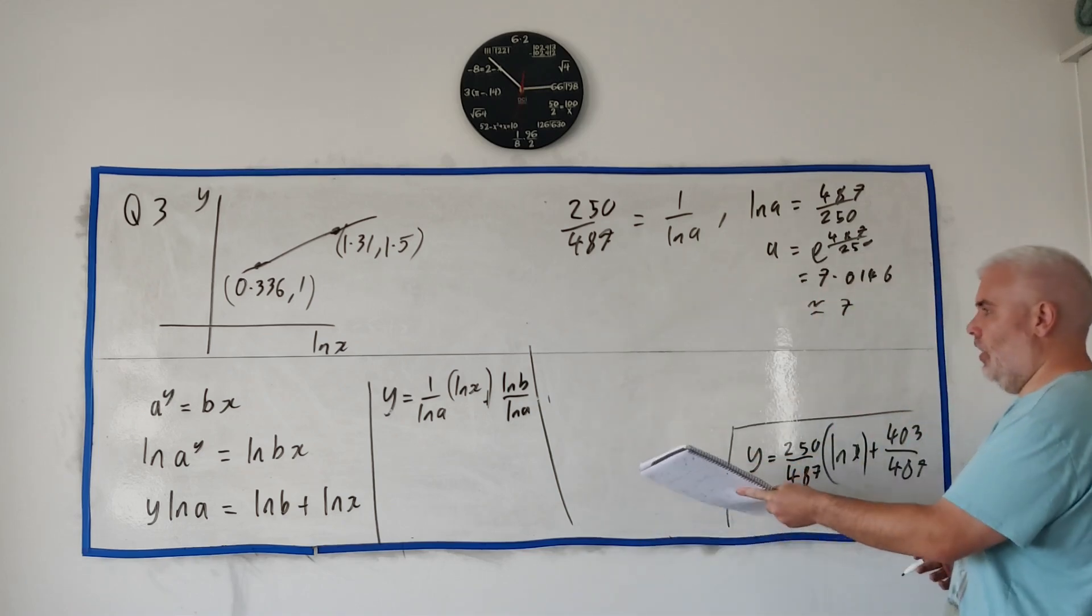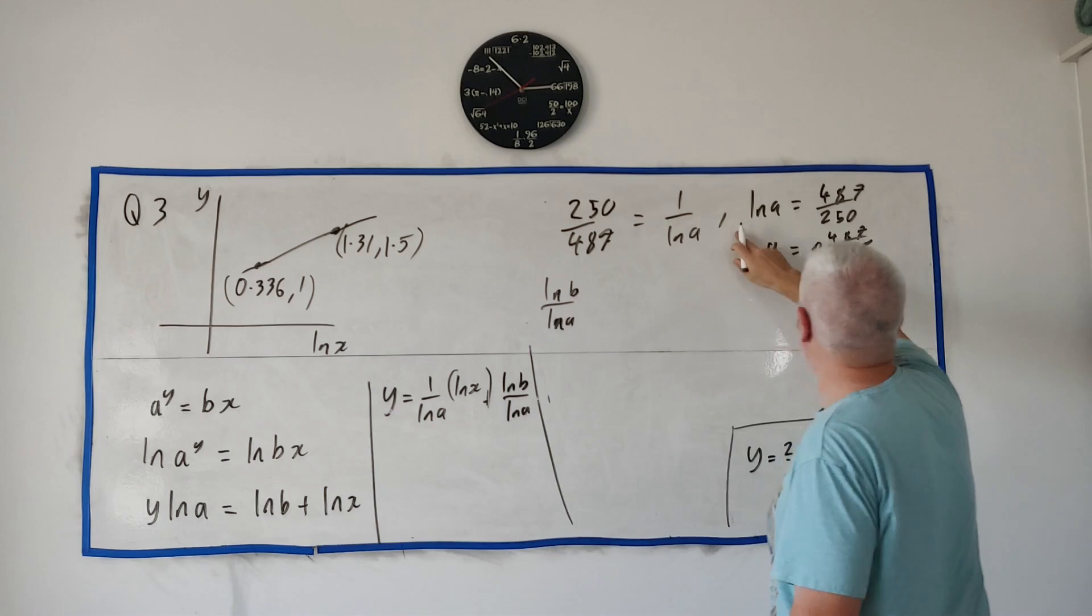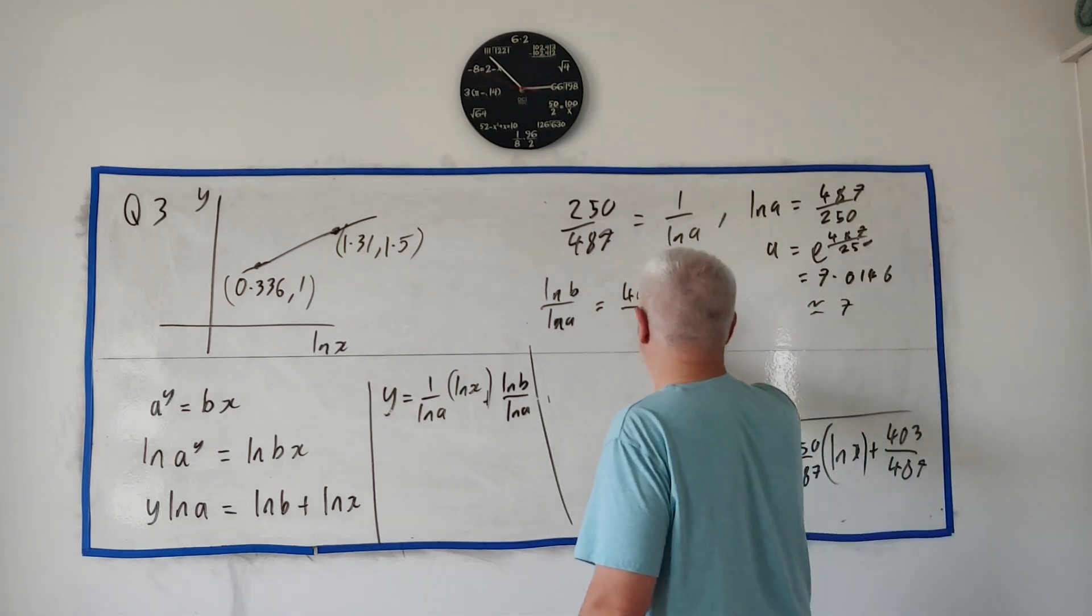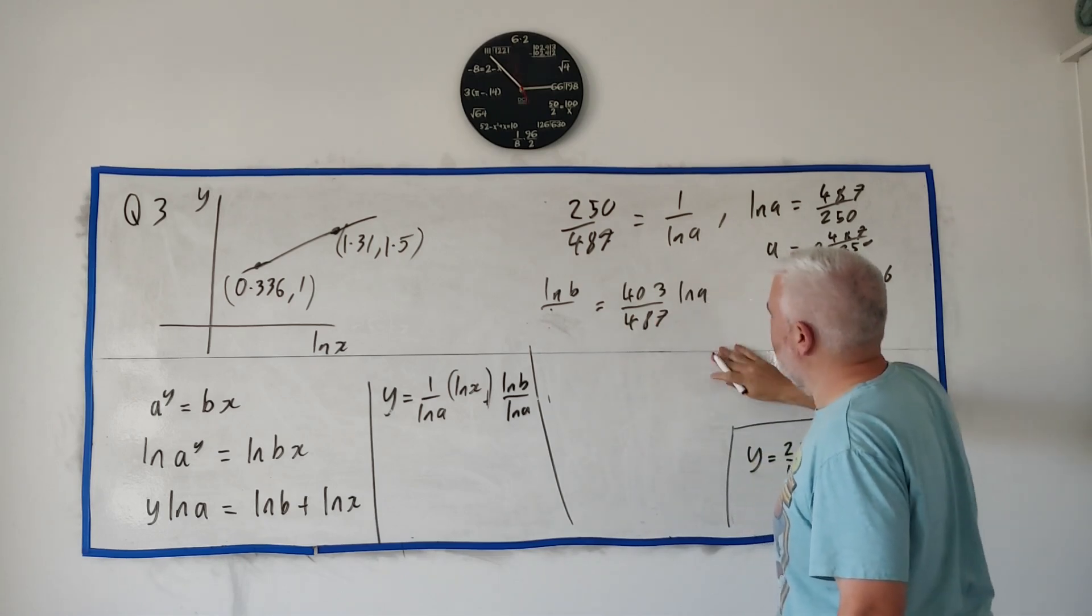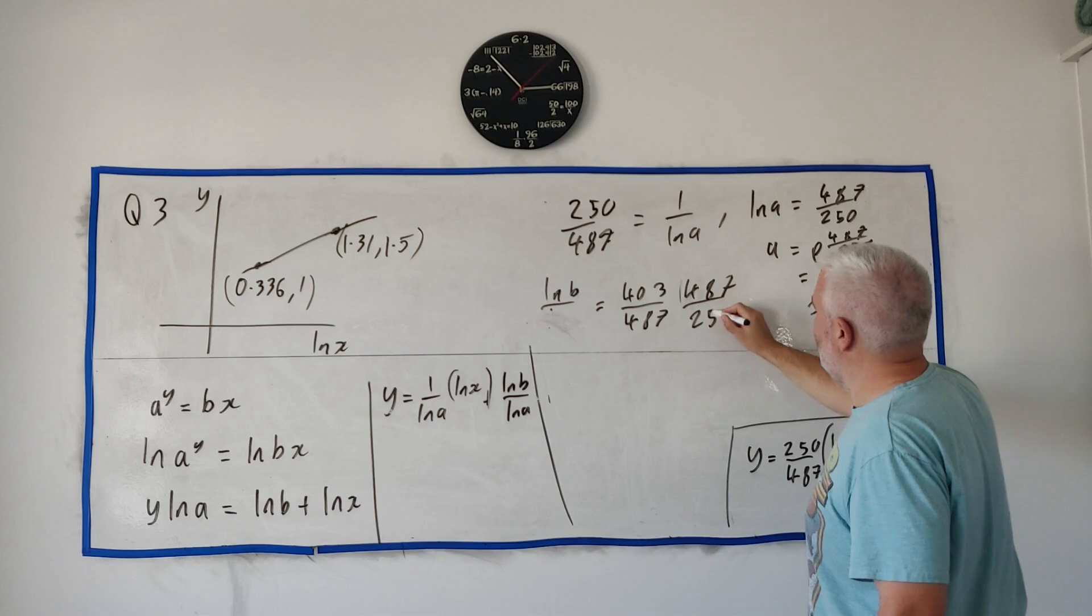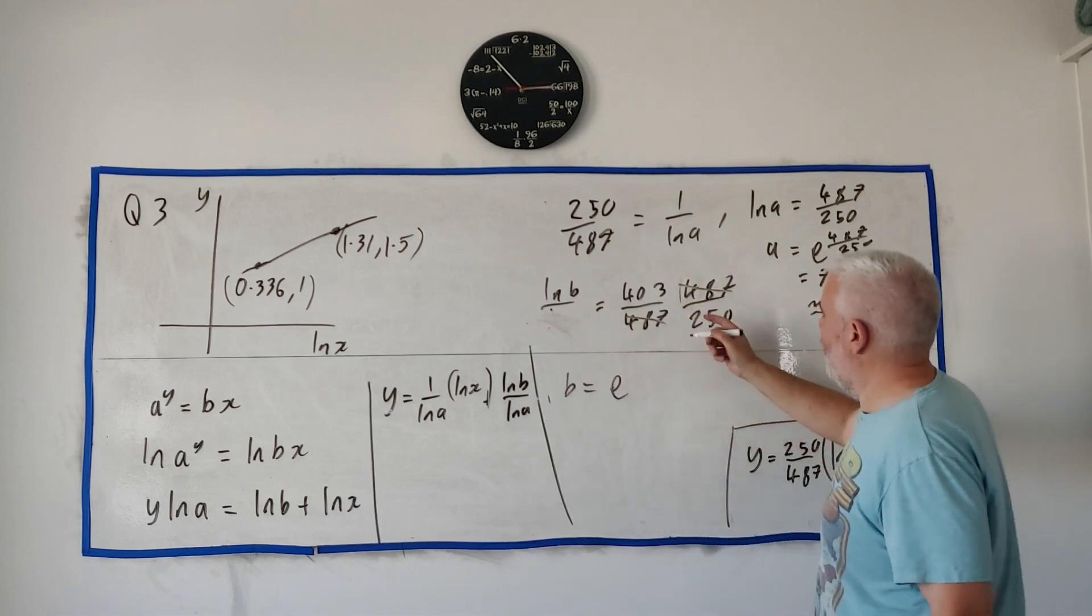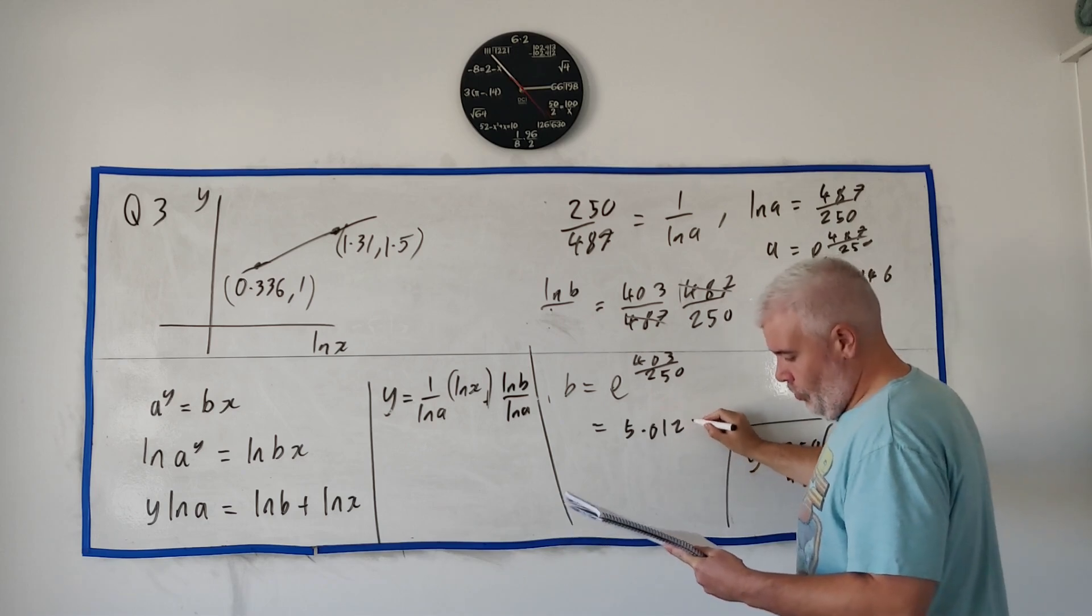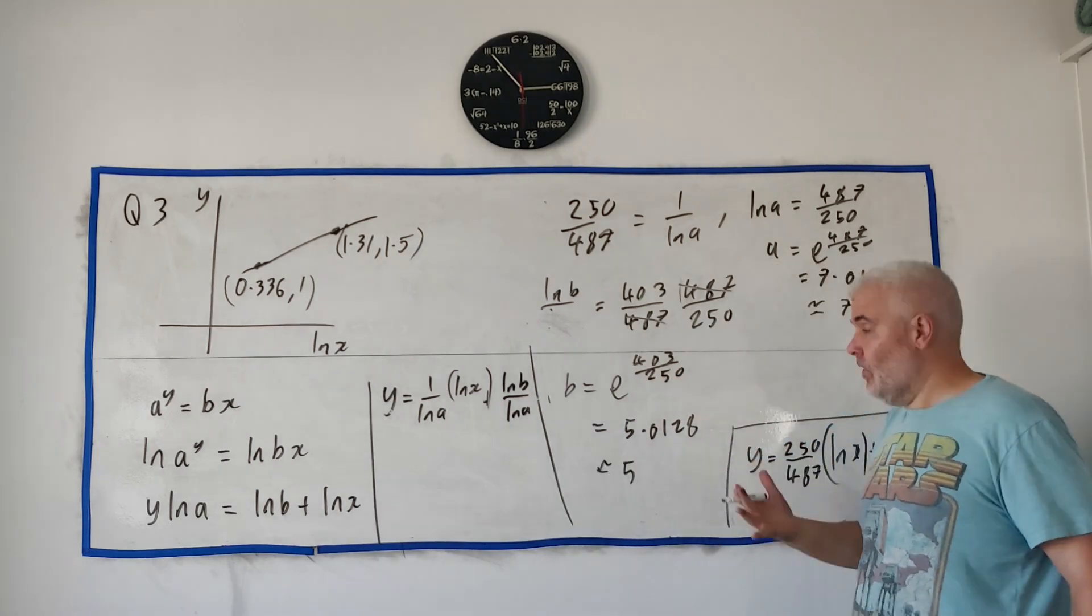Do the same with natural log b divided by natural log a. Remember, we know what natural log a is. Here's the number right here. And that equals this number down here, 403 over 487. I'll fill it in down here. And remember, we know natural log a. So that becomes 487 divided by 250. And look, that's convenient enough because they cancel. So we're left with b is equal to e to the power of 403 divided by 250, which is equal to 5.012. Again, they want the nearest integer. So that's close enough to 5. So that's how you answer this question, or at least how I answer this question.